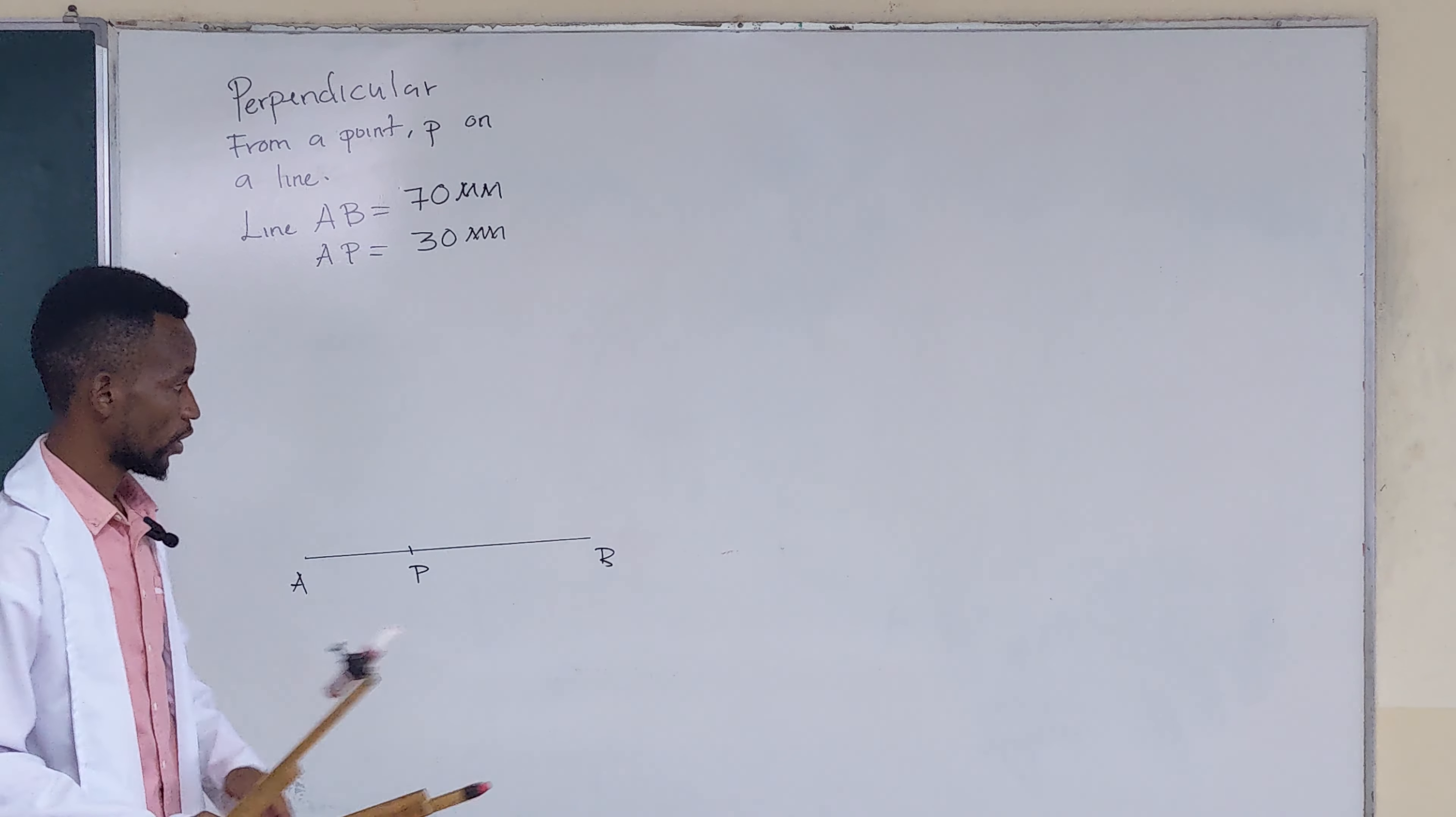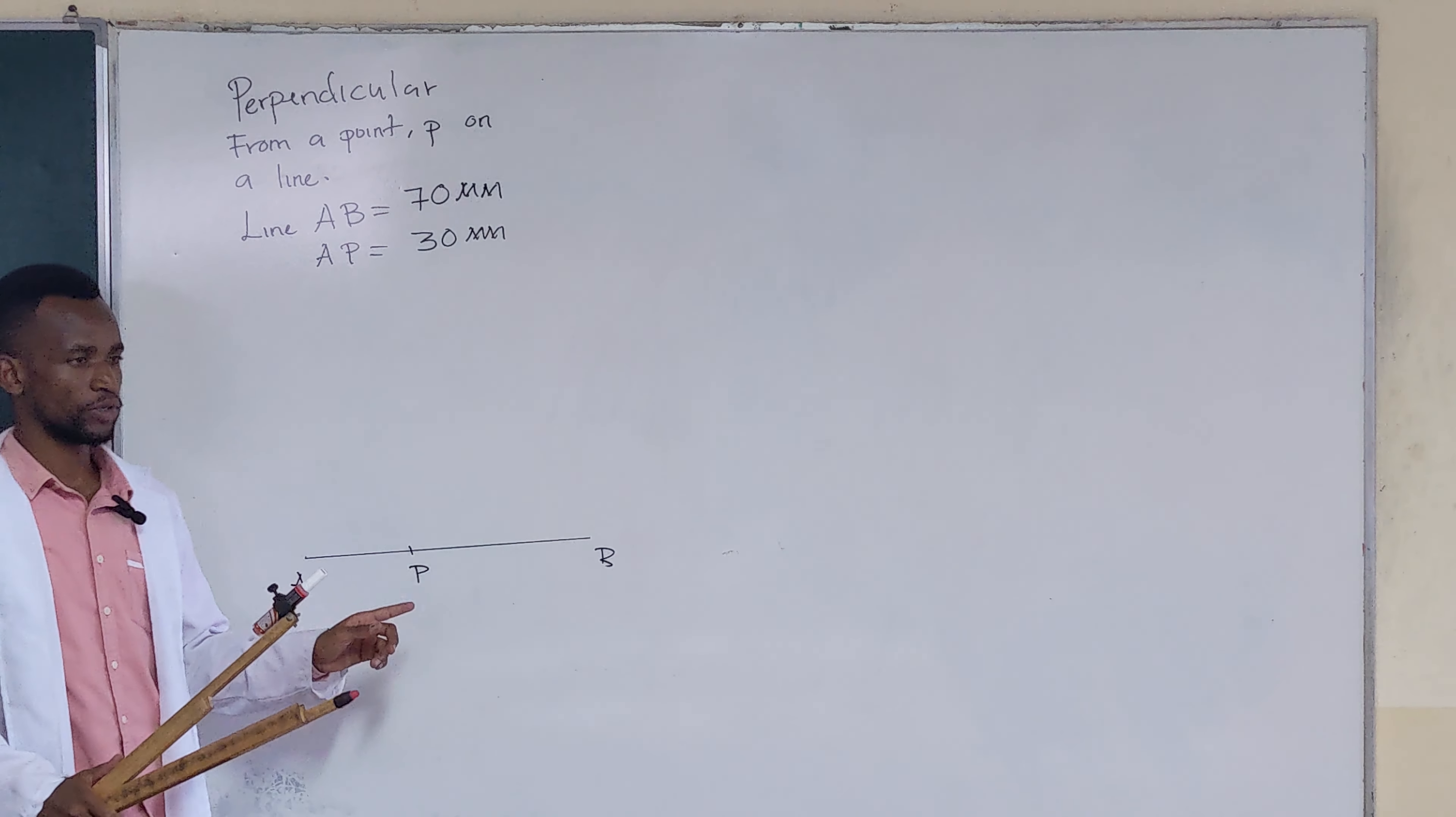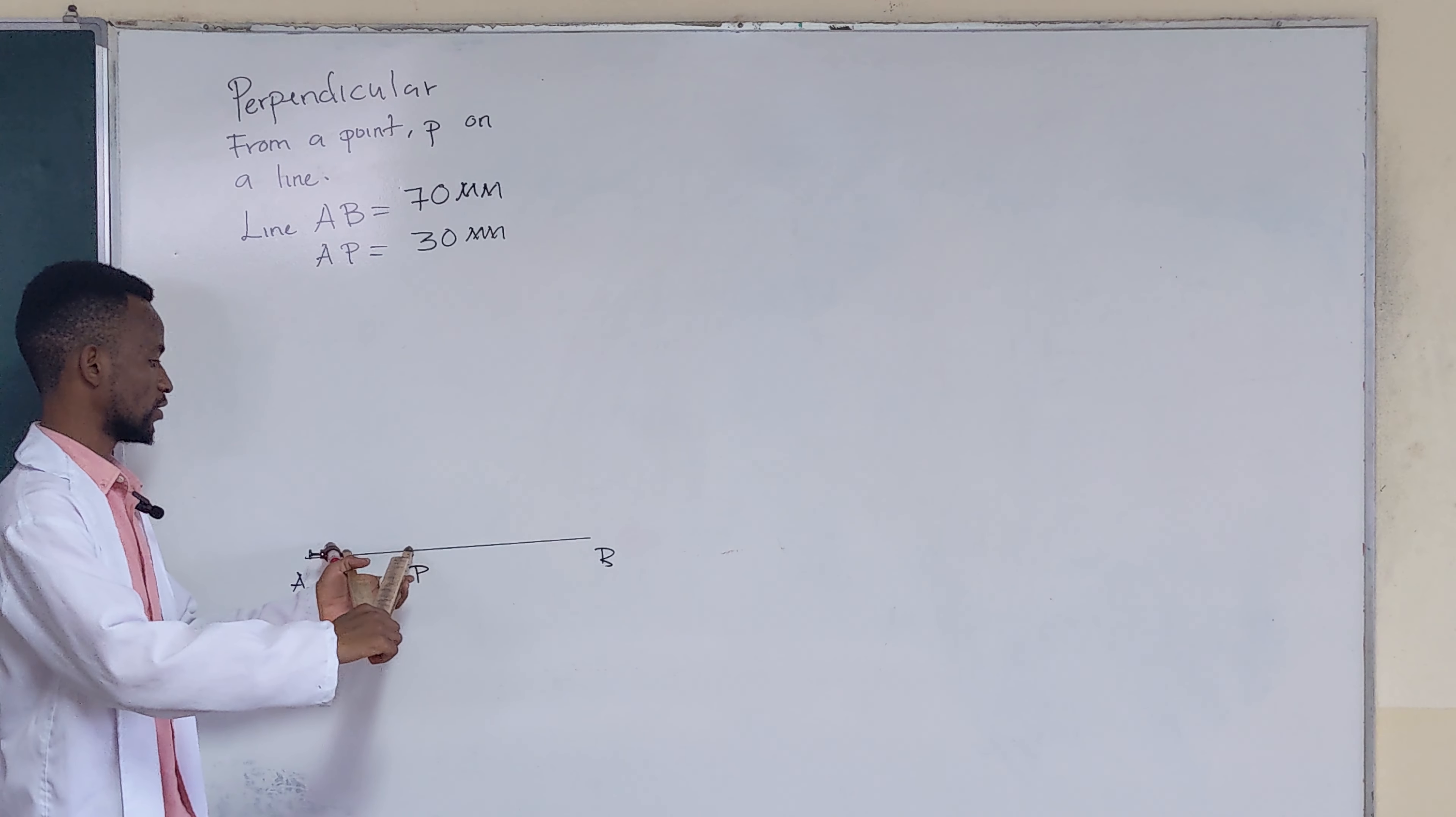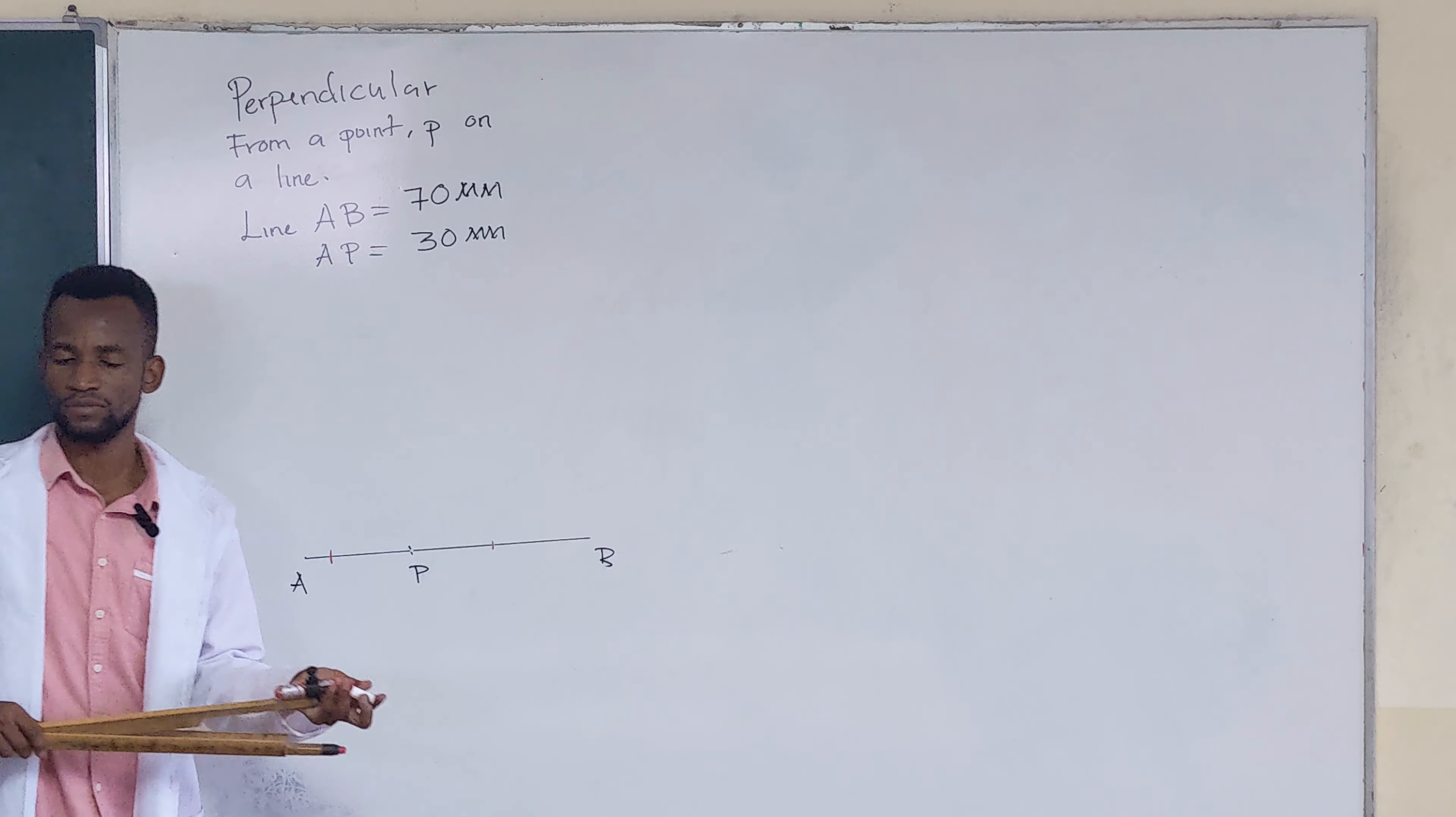So for us to draw a perpendicular line from this point on this given line, you get your compass. Open it to any convenient radius such that when you place it at point P, it will be able to cut the line AB at two points. For example, I'll open it to this radius and then stand at point P, strike an arc. And then this other side, strike an arc. Just like that.